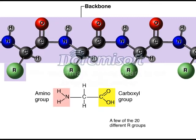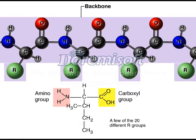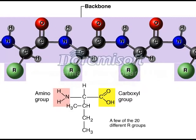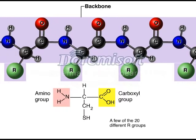It is the R group which projects out from the backbone that makes each of the 20 kinds of amino acids unique. Different amino acids have different properties that affect the folding of a protein. Thus, primary structure ultimately determines the shape of a protein, which determines its function.